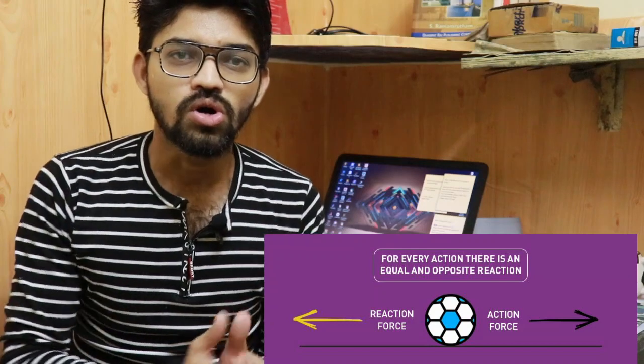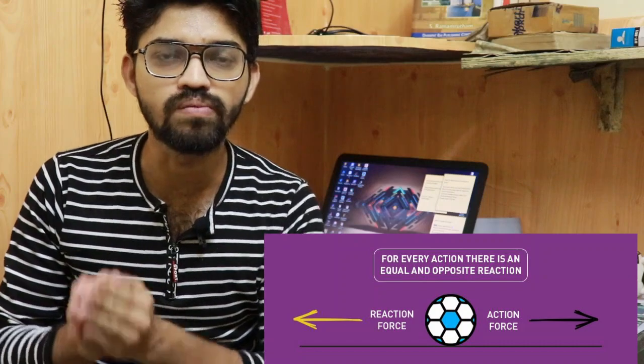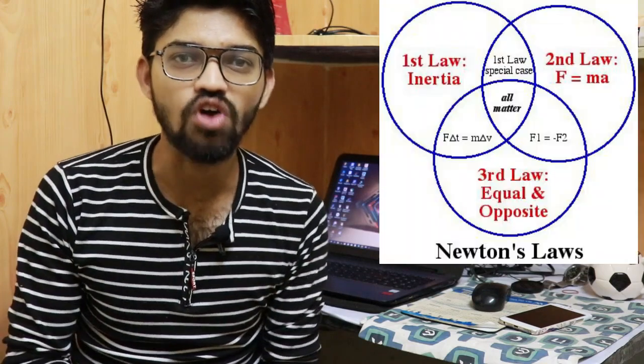Newton's third law deals with action and reaction — it states that for every action there is an equal and opposite reaction. This law is essential in physics and is typically seen in rockets: there is an equal and opposite force needed to move the rocket upward, with the action being the thrust forward and the reaction being the force against gravity.